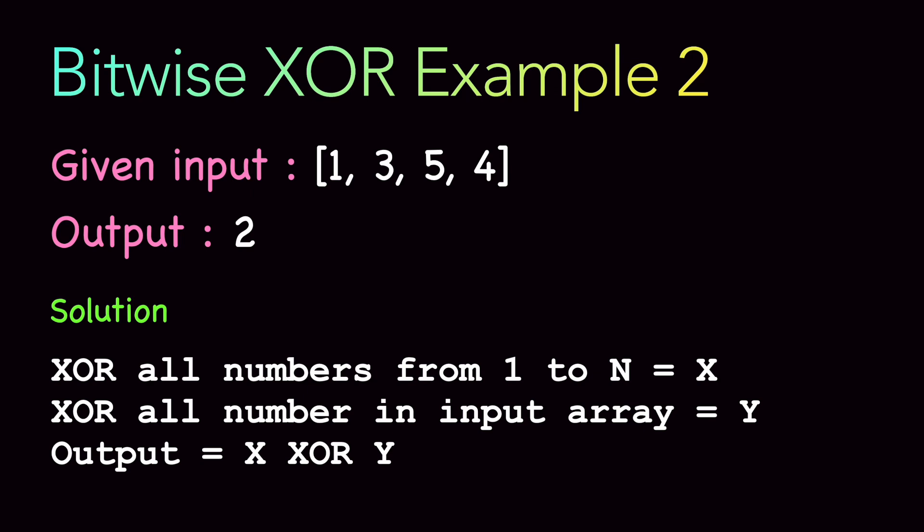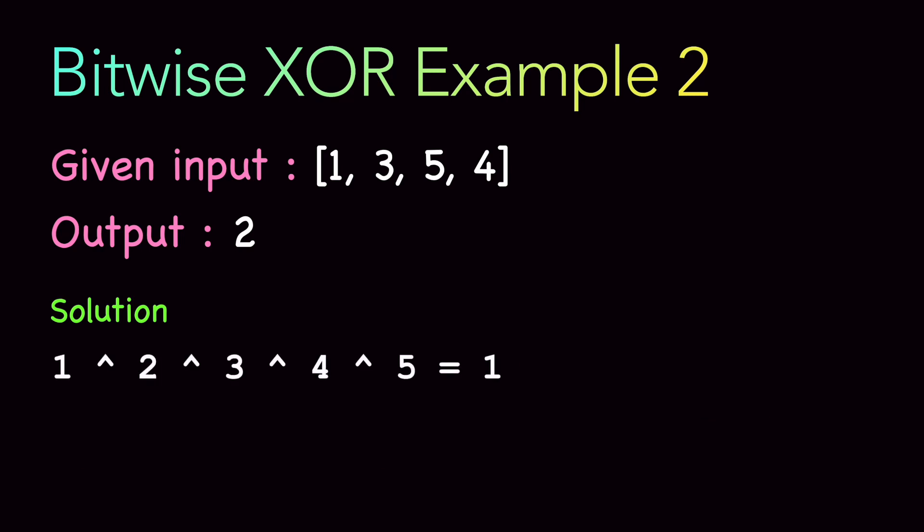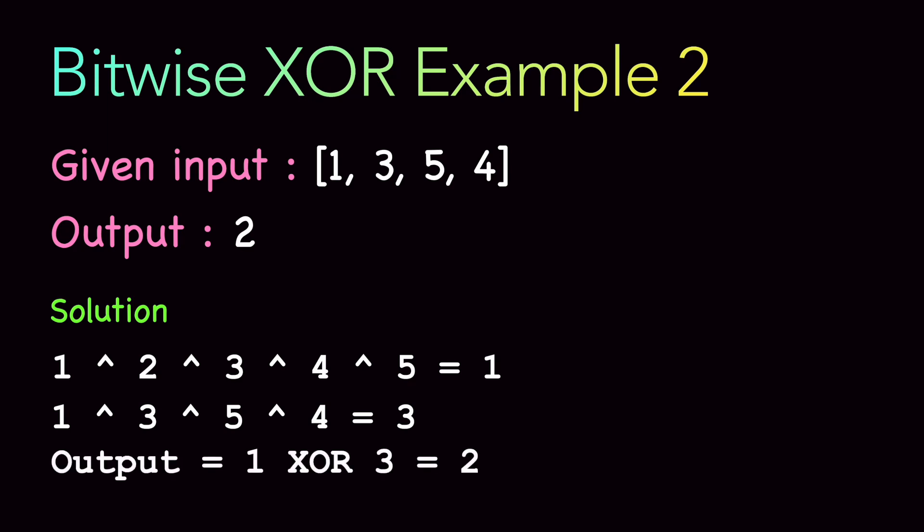First, do a XOR of all numbers from 1 to n — call it X. Then do a XOR of all numbers in the input array — call it Y. The missing number is X XOR Y. So 1 XOR 2 XOR 3 XOR 4 XOR 5 equals 1. Then 1 XOR 3 XOR 5 XOR 4 equals 3. Finally, 1 XOR 3 equals 2, which is our missing number. This is a great XOR example and is actually asked in FAANG interviews.